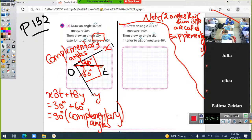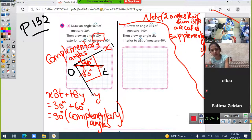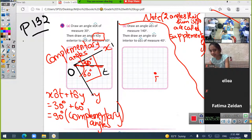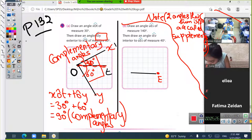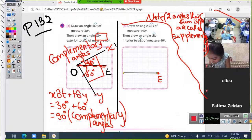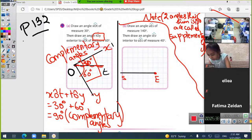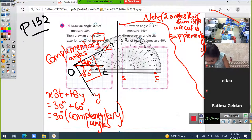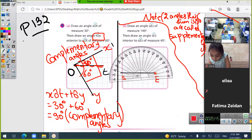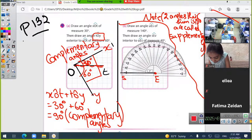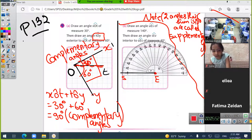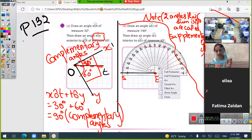Now part B: draw an angle UES of 140 degrees. First, I will mark the vertex. Then I will draw with the protractor angle UES, 140 degrees. As you know, 140 degrees is an obtuse angle, so it should be out here. 140, that's it.